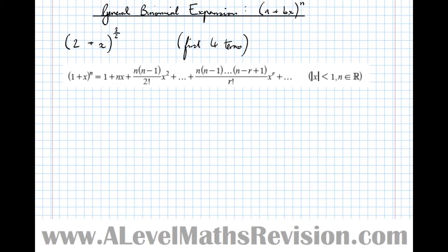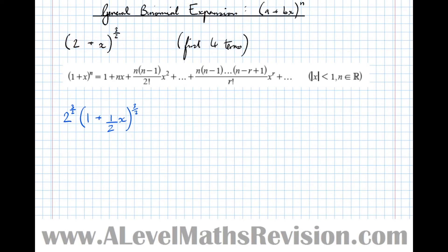There's an easy way of sorting this out. If we take a factor of 2 out of the bracket, that makes it 2 · (1 + ½x) to the power 3/2. But I can't just take a factor of 2 out — it has to bring the power with it. So that becomes 2 to the 3/2 at the front. This expression is exactly equivalent, and now we do have a bracket that contains a 1.